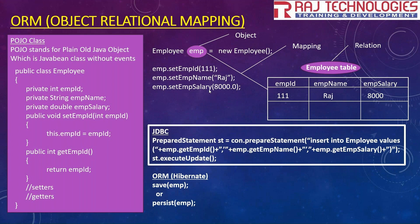Once we create this POJO class, we also call it the entity class. We want to persist the object — meaning we want to insert the employee object data into a table. For that, we create an employee class object like: Employee emp = new Employee(); then set values like emp.setEmpId(111), emp.setEmpName("Raj"), emp.setEmployeeSalary(8000). The objective is to insert this object data into the employee table, which has columns EmpId, EmpName, and EmpSalary.